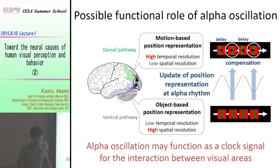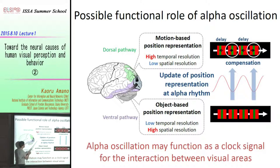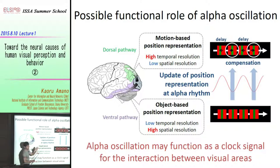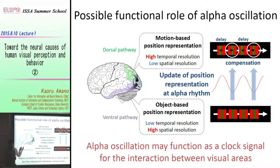Why does the dorsal pathway find a delay? I assume that the position of the object is calculated based on motion speed — if you integrate the speed across time, you can calculate the position. The problem is that red and green are said to be isoluminant. Several psychophysical researchers have shown that an isoluminant border without a luminance change is perceived to be much slower than a luminance-defined border, which is the red-and-black border in this case. So there's a difference in perceived speed, and when you integrate that speed, the position of the green bar tends to be delayed.